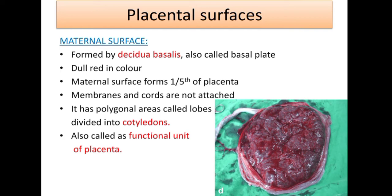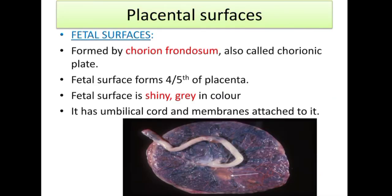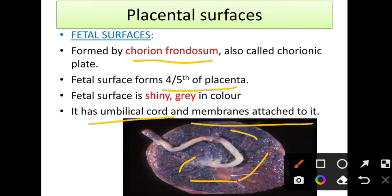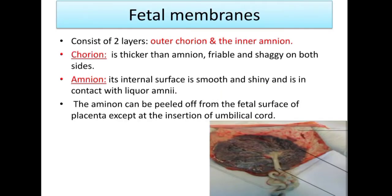The fetal surface is formed by chorion frondosum, also called the chorionic plate. The fetal surface forms four-fifths of the placenta. As you can see in the picture, it is shiny gray in color. The fetal surface is shiny and gray, while the maternal surface is dull red — this is how we differentiate them. The umbilical cord and membranes are attached to the fetal surface.